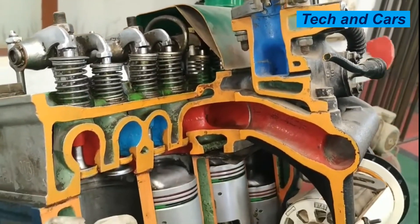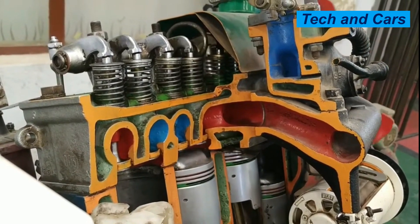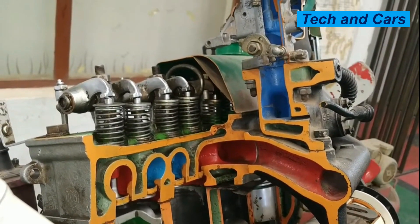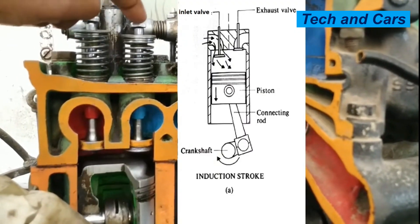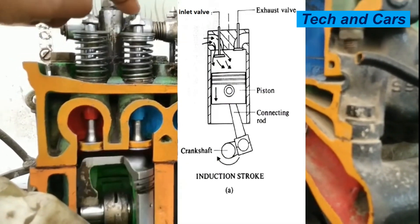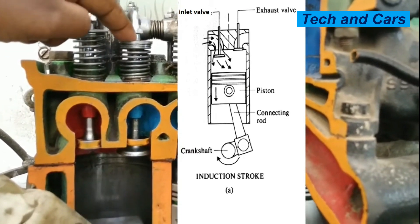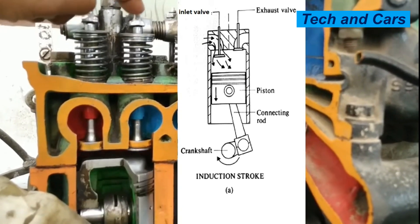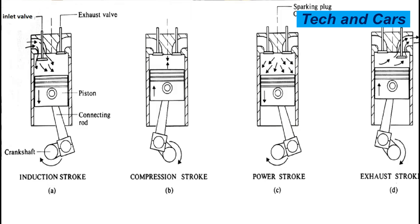Now let us see how power is produced in a four-stroke gasoline engine. In the induction stroke, or intake stroke, the piston is moving down inside the cylinder. At the same time, the inlet valve is opened and a mixture of air and fuel is admitted into the cylinder, which is partially vacuumed due to the descent of the piston. Just after the piston reaches the end of its downward stroke, the intake valve will be closed again, and the mixture of air and fuel is sealed in the cylinder.